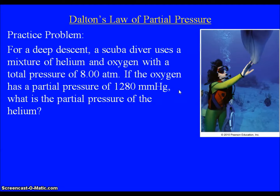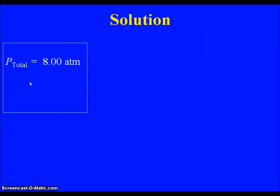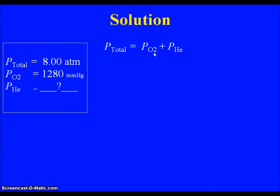Let's take a look at a question. A scuba diver has a tank with a mixture of helium and oxygen. The total pressure in the tank is 8 atmospheres, and oxygen is contributing 1280 millimeters of mercury. We want to know the partial pressure of the helium. Go ahead and pause the video, try to work that out on your own, and then play it and I'll show you the solution. First, make our data table: total pressure is 8 atmospheres, pressure from oxygen is 1280 mmHg, and we want the pressure of helium. Rearranging Dalton's law: P_helium = P_total minus P_oxygen.